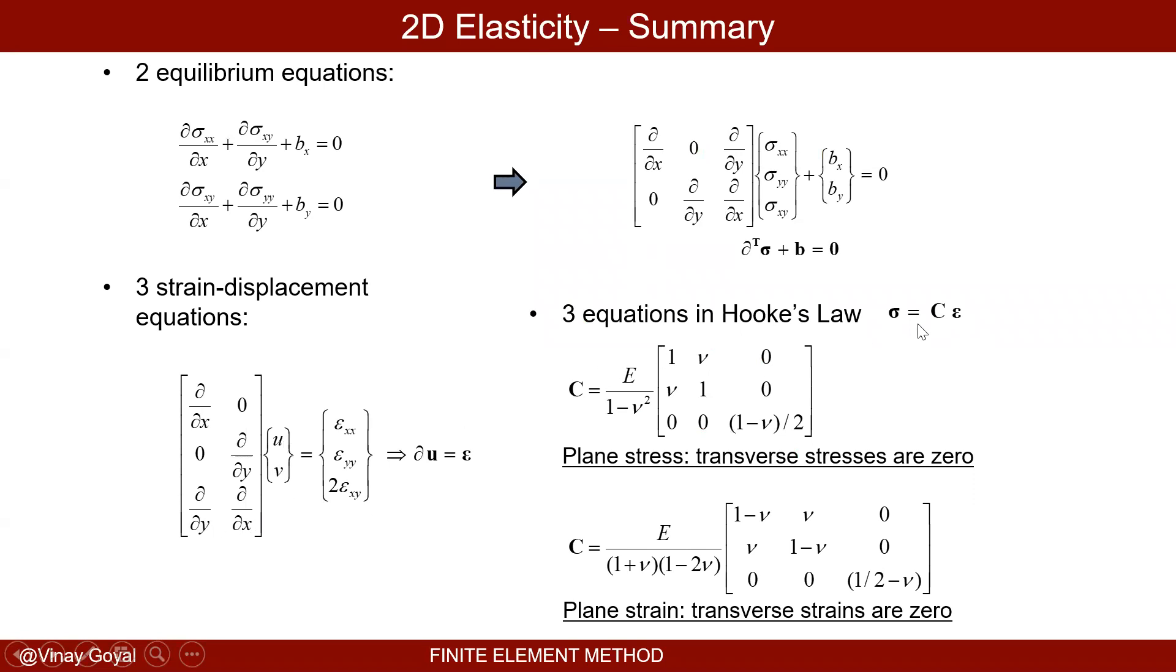The three equations in Hooke's law is sigma bold equals c bold times strain bold. C bold is this quantity here for plane stress. In these cases for plane stress what we're talking about here is thin structures. And for plane strain the constitutive law that goes in here is slightly different and that's meant for situations where the transverse strains are zero.